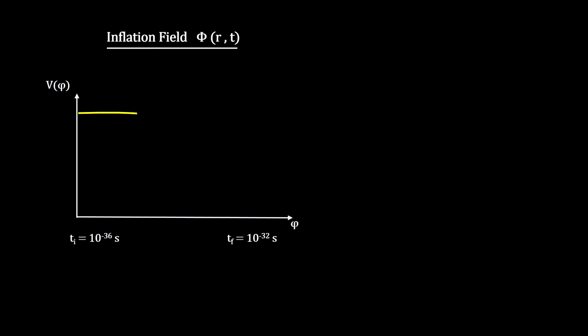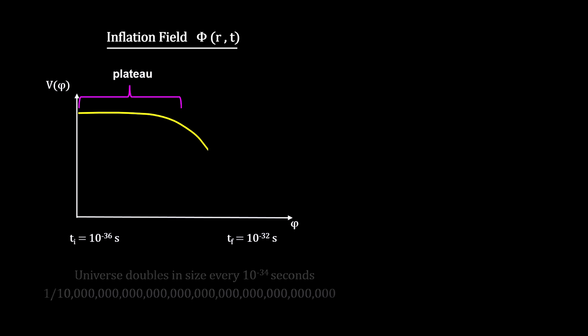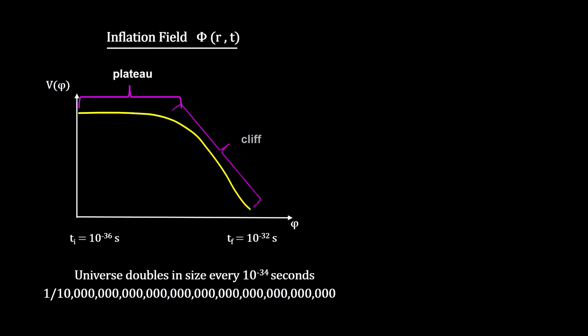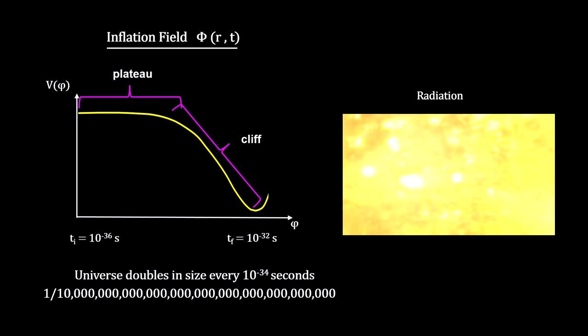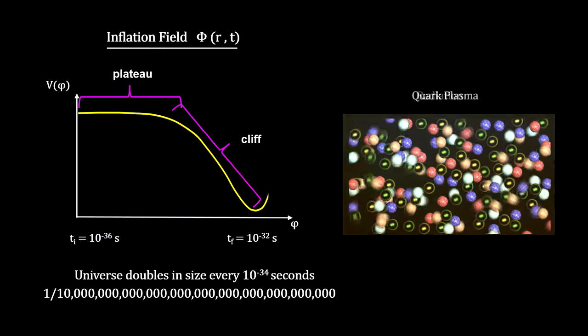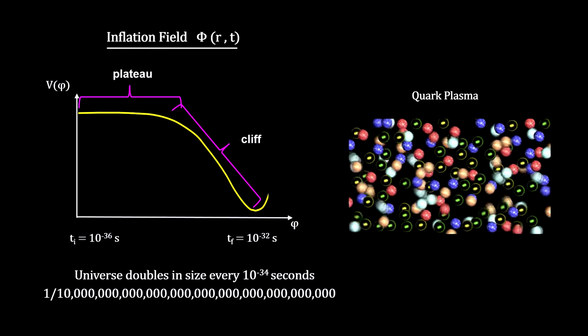For example, as we covered in the How Old Is It? video book on the Lambda Cold Dark Matter Big Bang Theory, the universe began with an extremely short period of exponential expansion called inflation that produced a radiation-only universe that cooled into a quark plasma.